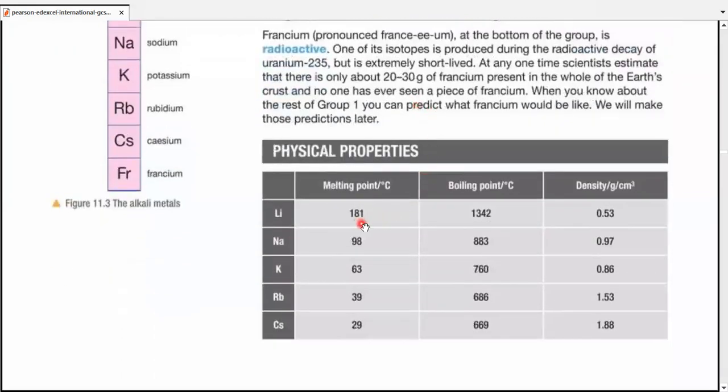Physical properties. If you try to find a pattern, you would see the melting point is decreasing down the group as well as the boiling point, but the density increases down the group. This is for Group 1. Remember melting point and boiling point are decreasing. However, the density is increasing if you go from top to bottom in the group.